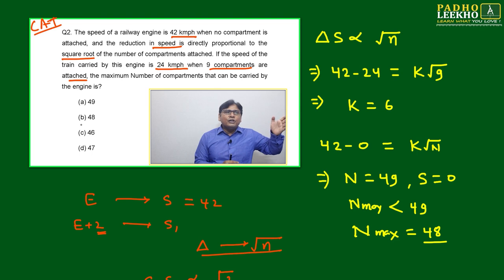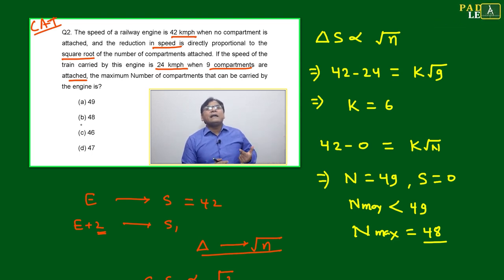Now it is given one relation. If the speed is reduced from 42 to 24, how much reduction is there? 18 is the reduction. The speed is reduced by 18 km per hour.